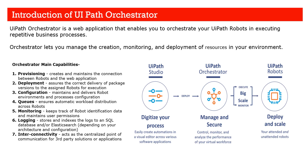UiPath Orchestrator is a web-based application that enables you to orchestrate your UiPath robots in an executing environment to run repetitive business processes. The main capabilities include provisioning — it creates and maintains the connection between your robot and the web application. There's a heartbeat mechanism where the robot sends a continuous heartbeat to the web application, giving information about your robot. The second capability is deployment — it assures the correct delivery of packages and versions to be assigned to robots for execution.